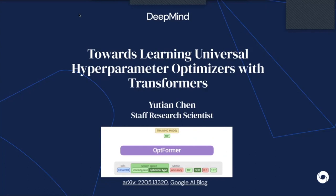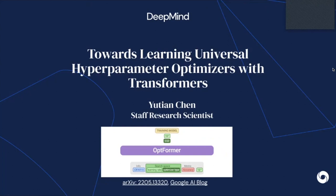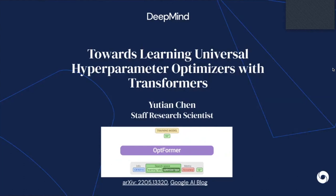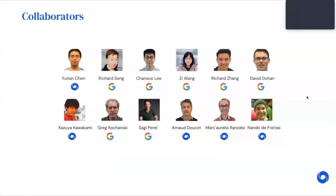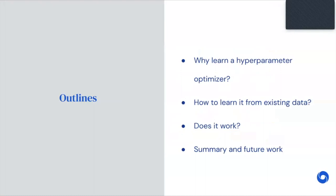Thanks for the opportunity to present our work. Feel free to stop me if there's anything unclear — the more questions, the better. Our work is about applying a transformer model to learn from all possible data generated for hyperparameter optimization. This is a joint work with many amazing colleagues at DeepMind and Google. Today I'll talk about the motivation, how to learn hyperparameter optimizers from data, how well it works compared to baselines, and a quick summary with future works.